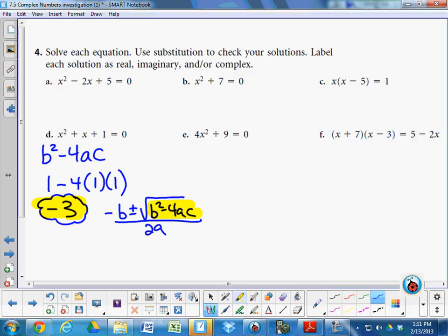We know that that highlighted answer is negative 3. So I don't have to redo all that work. What's the opposite of B? Plus or minus the square root of what's the highlighted stuff? All over 2 times 1.